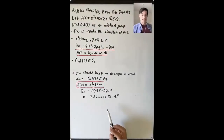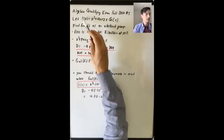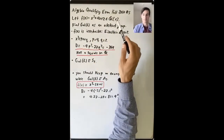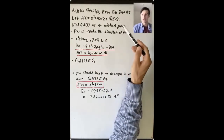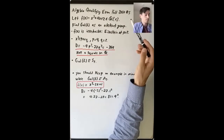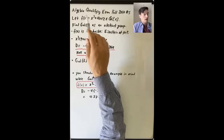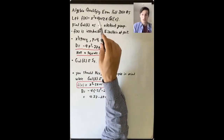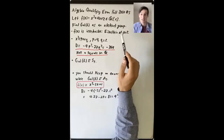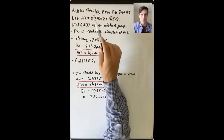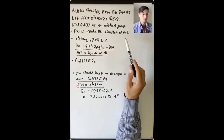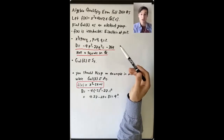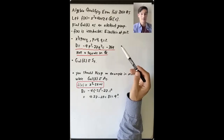Let's work through an example. This is algebra qualifying exam, Fall 2010, number 5. Let f(x) = x³ + 4x + 2, a polynomial in Q[x]. You're asked to find the Galois group of f as an abstract group — just saying what group is it isomorphic to. First we check whether this cubic is irreducible or reducible. It is irreducible: it satisfies Eisenstein's criterion at p = 2. So the Galois group is isomorphic to either S₃ or A₃.